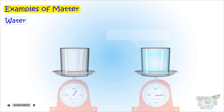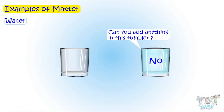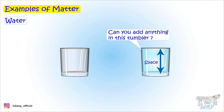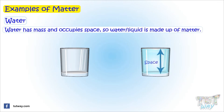Now can you add anything to a tumbler which is already full? No, you cannot add anything to a tumbler which is already full with water or any other liquid. So it means that water or any liquid occupies space. So water or any liquid has mass and occupies space — so it is matter.